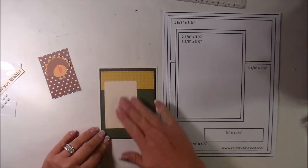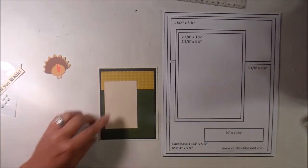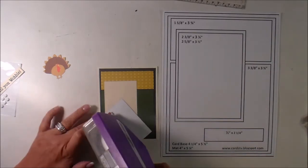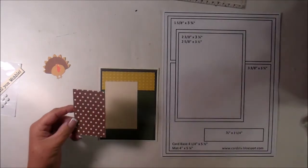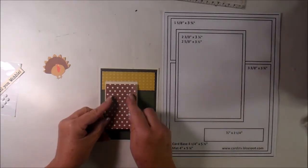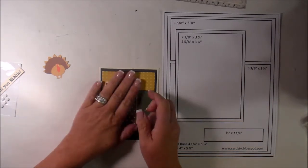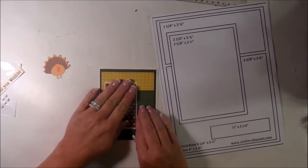This is AC cardstock that I got at a scrapbooking expo. I love it. It's got a little bit of texture to it, but it's thick, not like a 110 pound. And then I've got this polka dot paper as well. This was a scrap, so sorry, I can't tell you where I got that from.